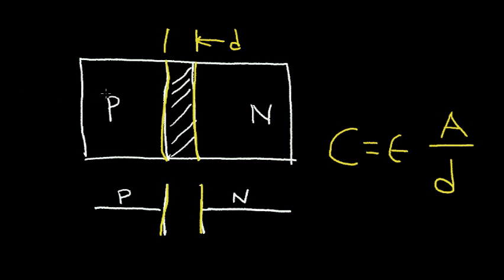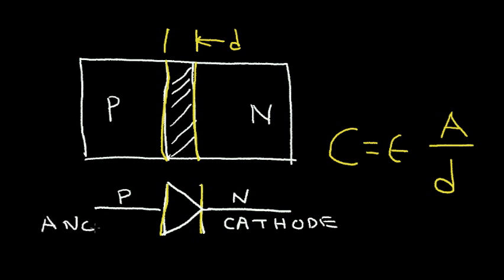Besides being a capacitor, this P-N junction region also forms a diode. The symbol for a diode is this. The N region is sometimes referred to as a cathode, and the P region is referred to as an anode. The diode allows current — positive current, or what we can call hole current — to flow in the direction of the arrow in the diode. And the diode will block current flow in the other direction.